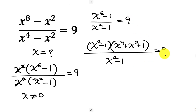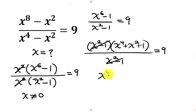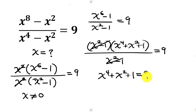Now notice that x squared minus 1 will cancel out, leaving behind x to the power of 4 plus x to the power of 2 plus 1, equal to 9.